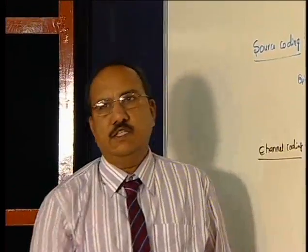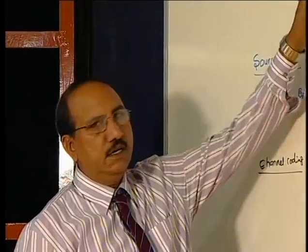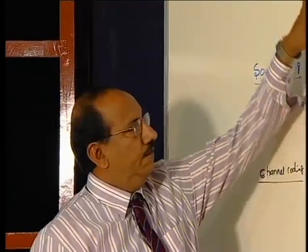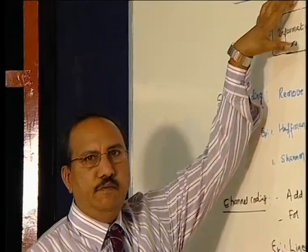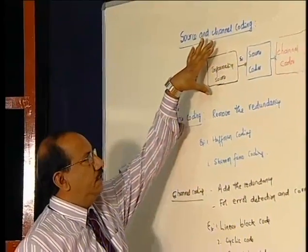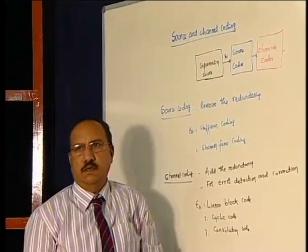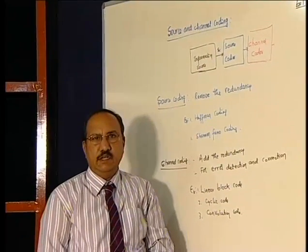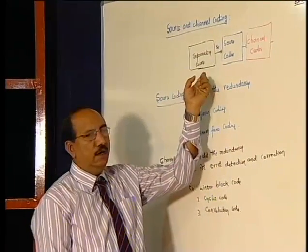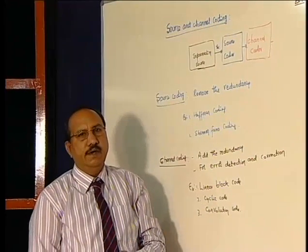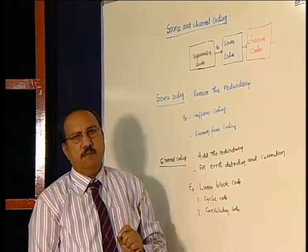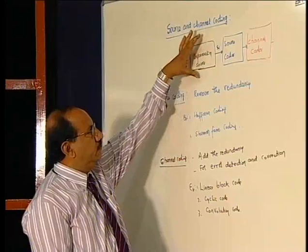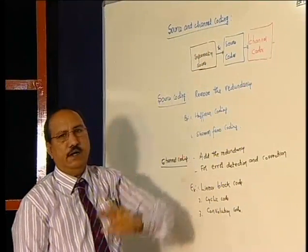let us consider the transmitter block diagram of any digital communication system. The first block is the information source. The information could be either in analog or digital form. If the source is in analog form, it will be converted into digital form by means of sampling and quantization. If it is already in digital form,